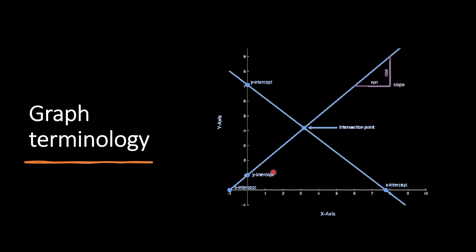Another important term to know is slope. The slope tells us how steep a line on a graph is as we move from one point on the line to another point. Technically, slope is the change in the vertical axis divided by the change in the horizontal axis. The formula for calculation of slope is rise over run.